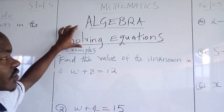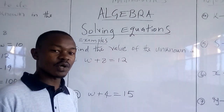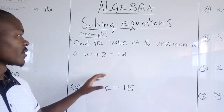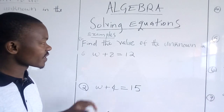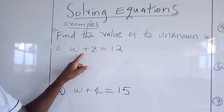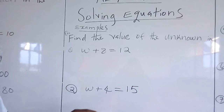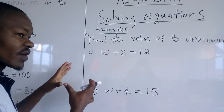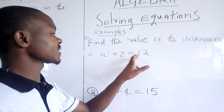The third topic here: we have solving equations. We want to see how we can solve the equations given the unknowns and the whole numbers. For example, we shall go with the examples that are here. The question is: find the value of the unknown. In the first one we have W plus 8 is equal to 12. What are we supposed to do? Unknown are the letters. We are supposed to make sure we have the unknowns on the left hand side and collect the like terms, which are the whole numbers, together.